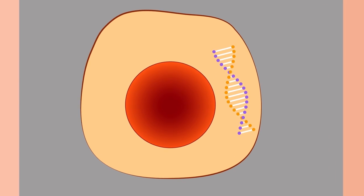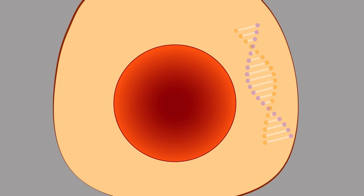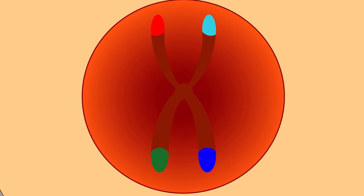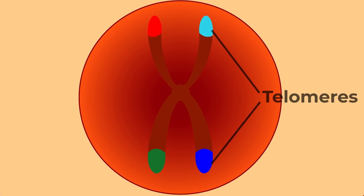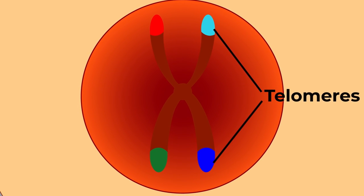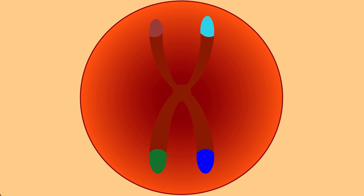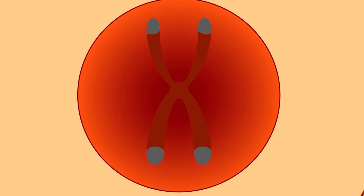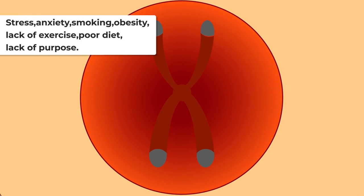Telomeres, from the Greek telos, end, and meros, part, are the caps at the end of each strand of DNA that protect our chromosomes. Telomeres, like the aglet at the end of shoelaces, can become frayed until they can no longer do their job. Telomeres are shortened as we age.